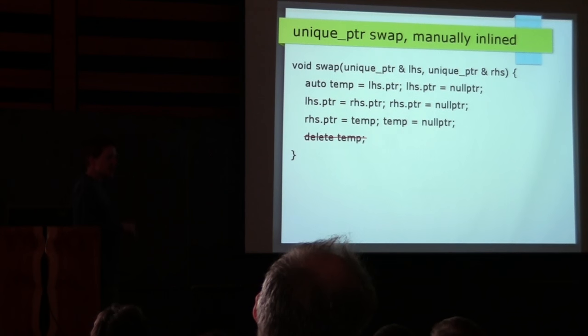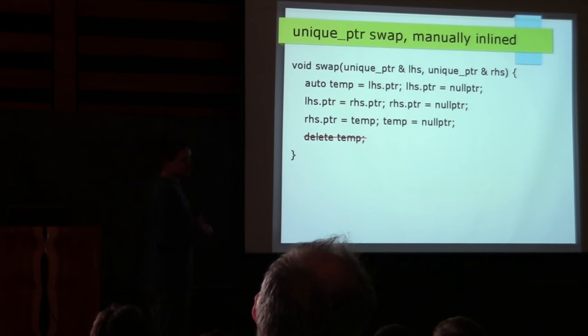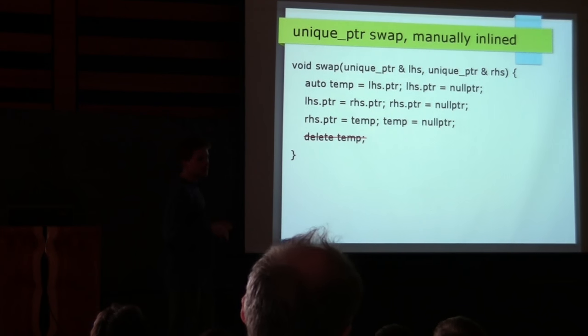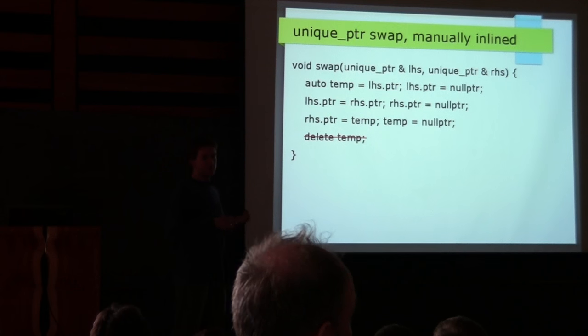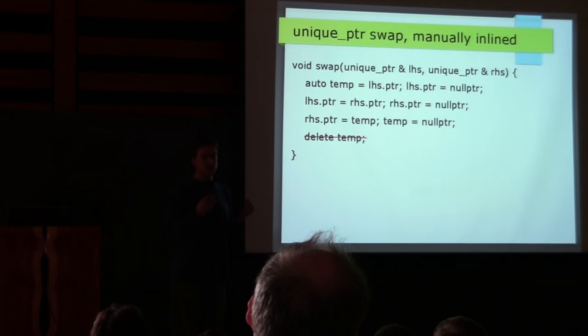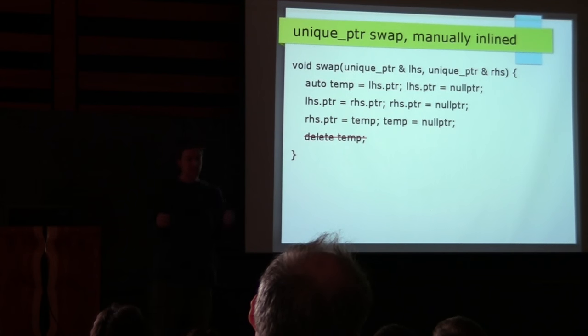So: vector swap should not exist as a member function and it should not exist as a specialization. It can be implemented as just the free function — the default version works.